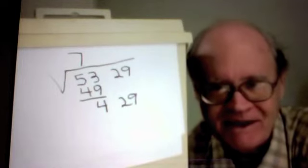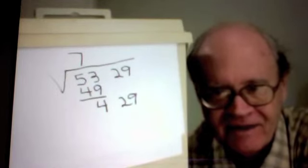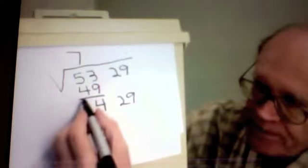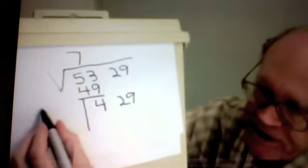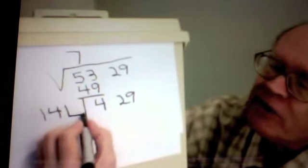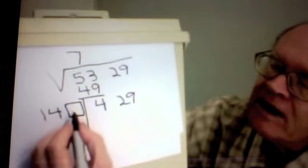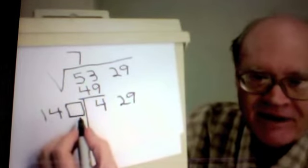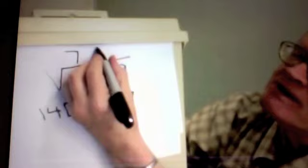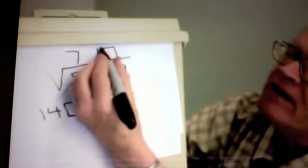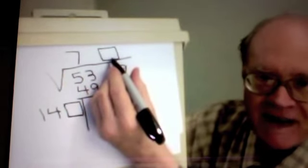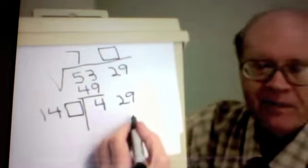Now I'm going to do something mysterious. I need a divisor. To get it, I'm going to double the 7. That is, multiply it by 2. 7 times 2 is 14. I write the 14 here. But I leave room for another numeral. And I'm going to do something else mysterious. I'm going to figure out a numeral to go here and put the same numeral here above the 29. So that 140 something times this same numeral will fit here. 3 will work. I will put a 3 here.